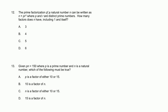Problem 12. The prime factorization of a natural number — you can kind of view that as positive integers. Sometimes they'll throw 0 in the natural number definition, depending on what context you're working in. But the prime factorization of a natural number n can be written as n equals p times r squared, where p and r are distinct prime numbers. How many factors does n have, including 1 and n itself?